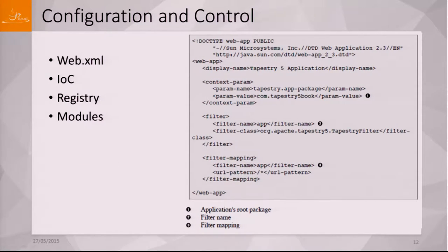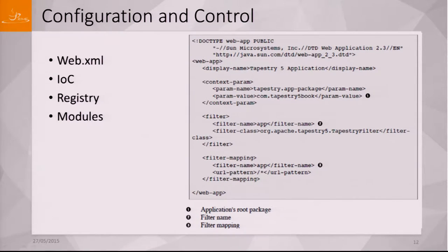The only XML configuration we need is the web.xml, and it should contain only three important things: we should specify the root package, the name of the filter, and the filter mapping. With the name of the filter, Tapestry recognizes our main module. The modules are the places where the dependency injection is described. We should have this main module — we could have more than one, but with the name of the main filter, Tapestry recognizes which one is the main module. Our main module will be named AppModule.